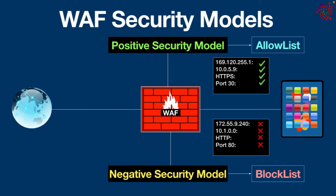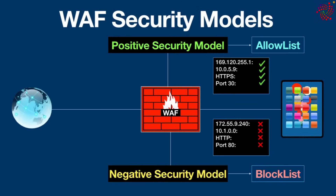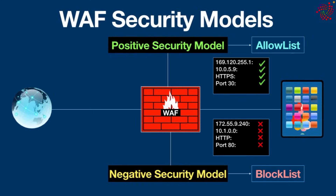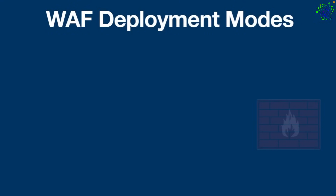Think of a block list firewall as a club bouncer instructed to deny entry to guests who don't meet the dress code. This model is easier to implement, but it cannot guarantee that all threats are addressed. It also requires maintaining a potentially long list of malicious signatures. The level of security depends on the number of restrictions implemented. Both block list and allow list have their advantages and drawbacks, which is why many web application firewalls offer a hybrid security model that implements both.